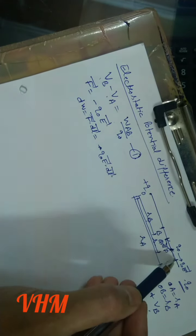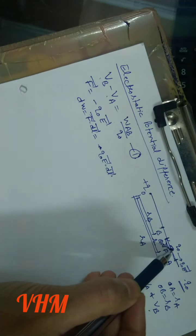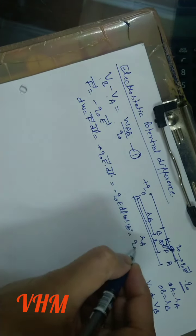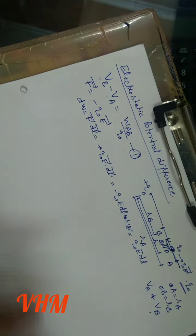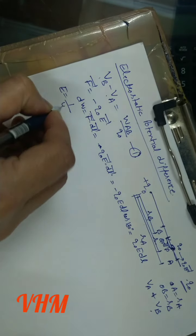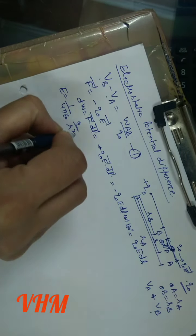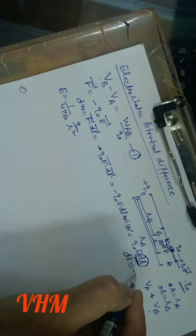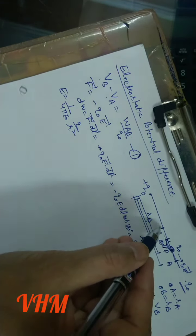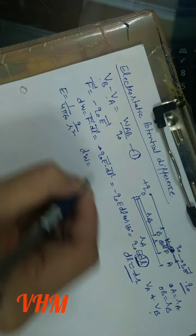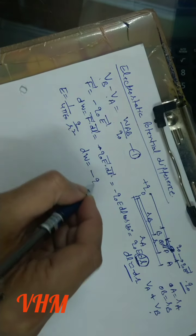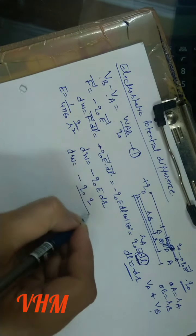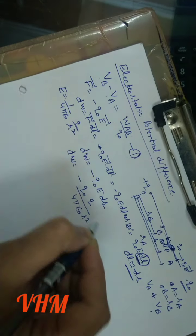Here E vector and DL vector have an angle of 180 degrees, so the small work done is minus Q₀E·DL·cos180° which gives minus Q₀E·DL. The electric field due to a point charge is 1/(4πε₀) · Q/R². To calculate total work done, DL is approximately minus DR because it is towards decreasing R. So small work done is minus Q₀E·DR, which gives minus Q₀Q / (4πε₀R²) · DR.